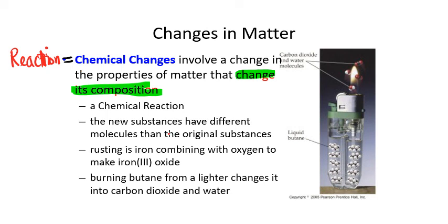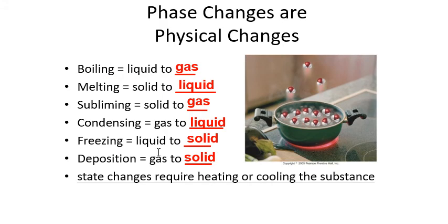Another example: whenever iron rusts, it means iron is combining with oxygen in the atmosphere. In the previous example you remember we had a chemical change — we saw that whenever we address the ability of a substance to make something new, we need to call that a chemical change.